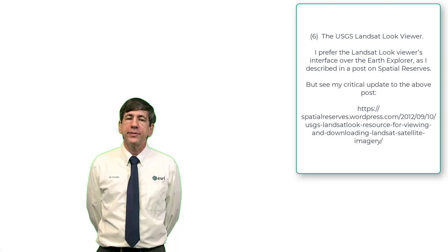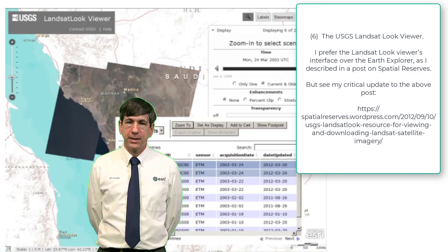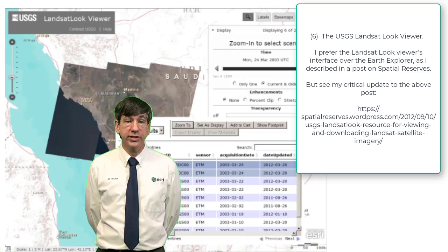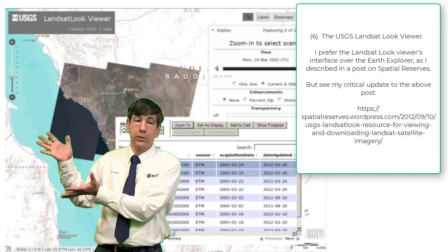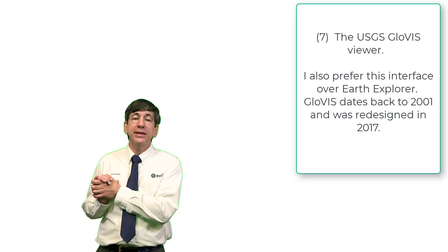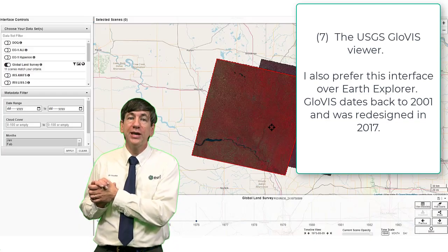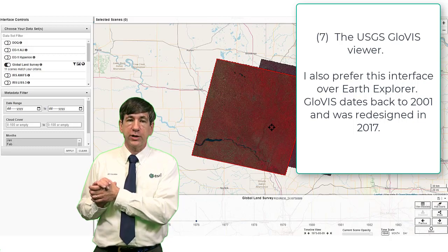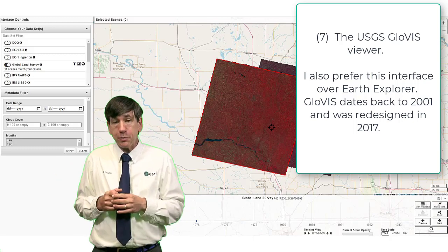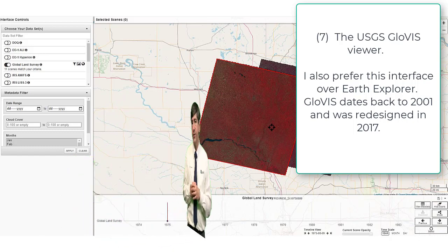Number six: the USGS Landsat Look Viewer. I prefer the Landsat Look Viewer's interface over the Earth Explorer. Number seven: the USGS GloVis Viewer. I also prefer this interface over Earth Explorer. GloVis dates back to 2001, so it's been around a while, and was redesigned in 2017.